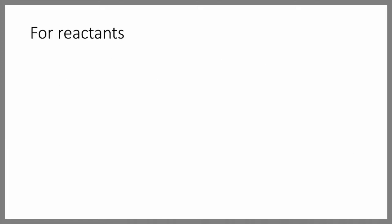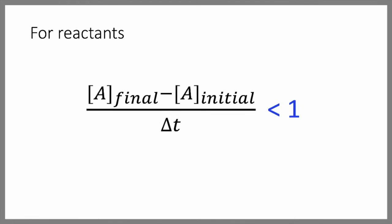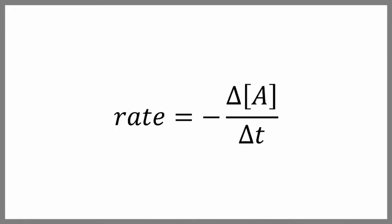Because the reactant is disappearing, the final concentration of A minus the initial concentration of A is always going to give you a number less than one. However, by convention, we always express rates in terms of positive numbers. And this is why we need to put a minus sign in the rate equation for the reactant's expression. You can think of this minus as a correction factor to make sure the rate is positive.